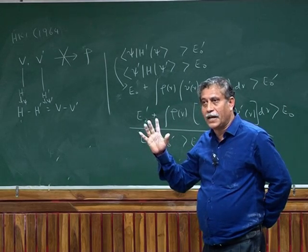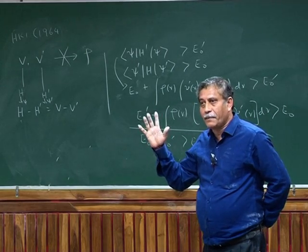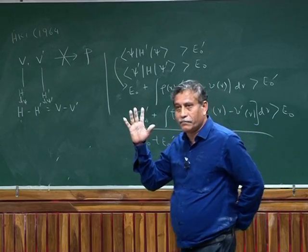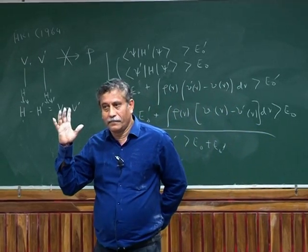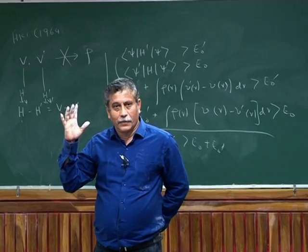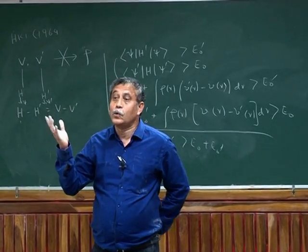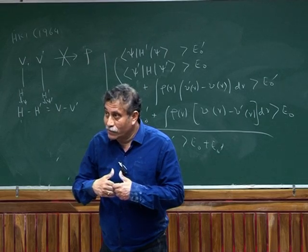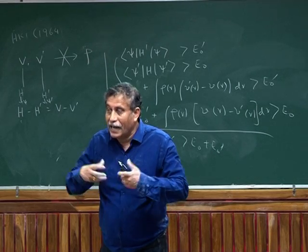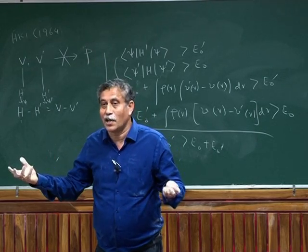But the fact is that he proved that given two V and V prime, you must have two rho and rho prime. Many people have argued, is the reverse true? Given a V, can I have two rho and rho prime? And that's, of course, a nonsense question.